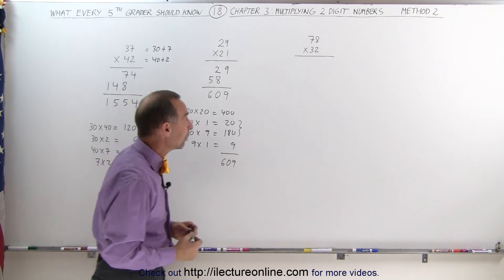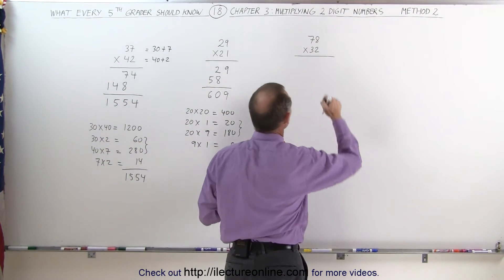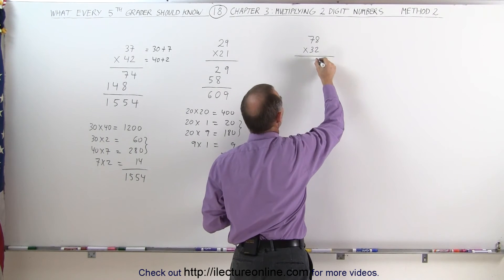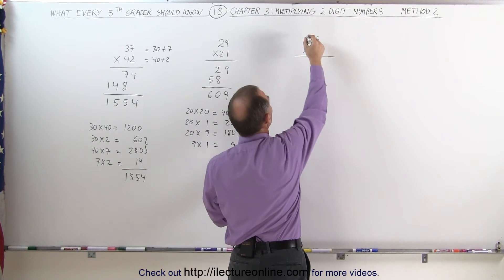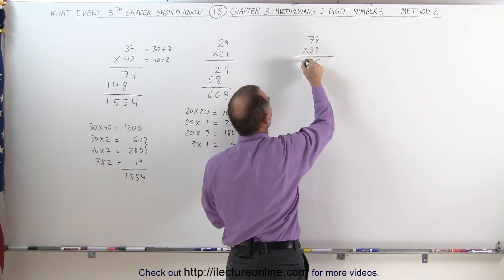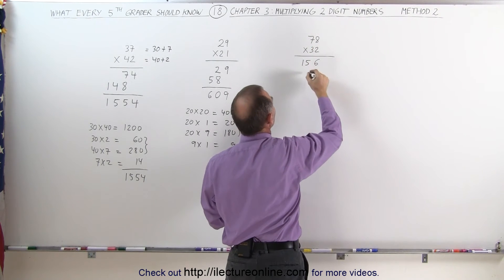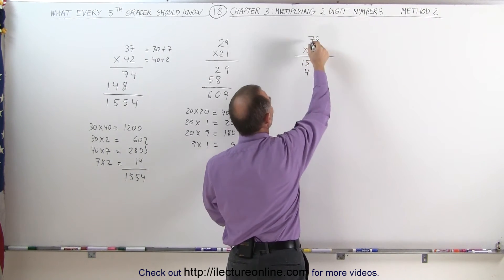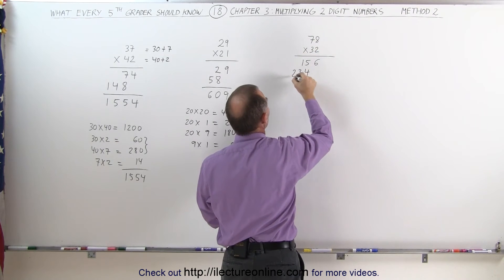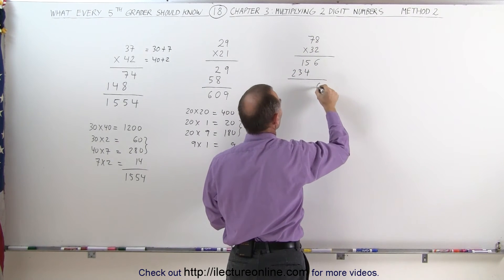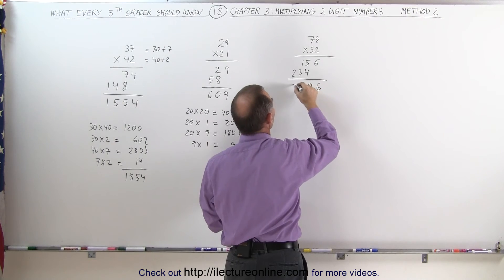Let's try the last one and see how we would do that one. Again, longhand. You take 2 times 8, which is 16, write down the 6, remember 1. 2 times 7 is 14 plus 1 is 15. 3 times 8 is 24. Write down the 4, remember 2. 3 times 7 is 21 plus 2 is 23. Add them all together, you get 6, 9, 4, and 2.